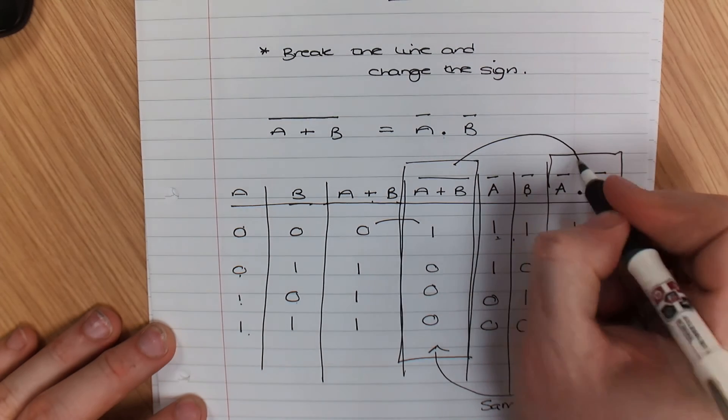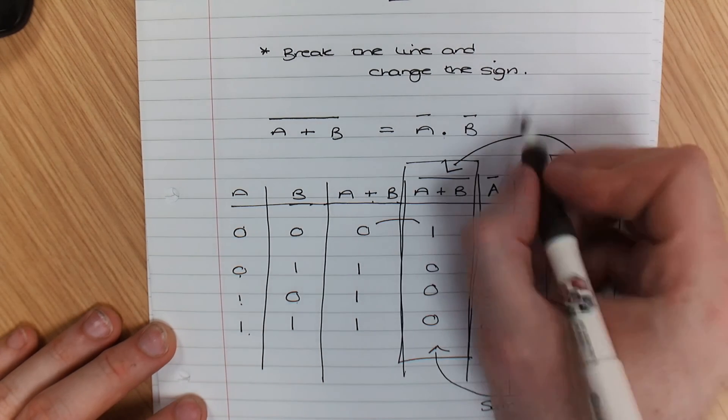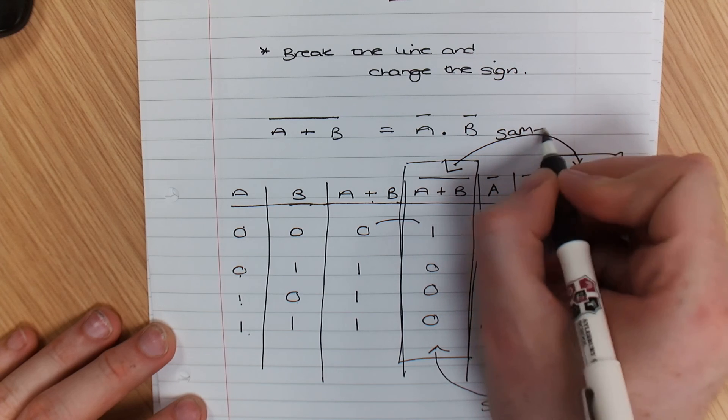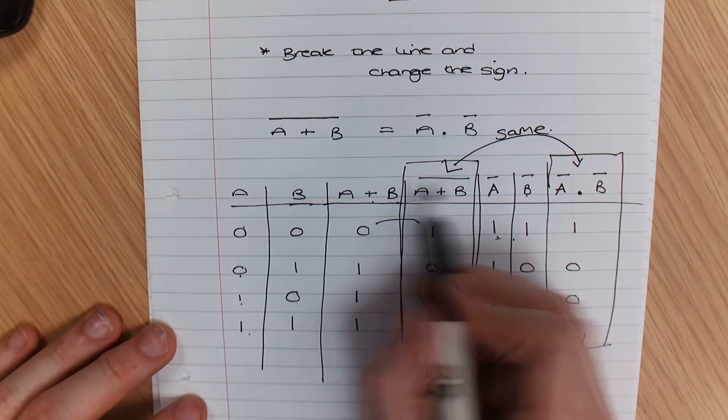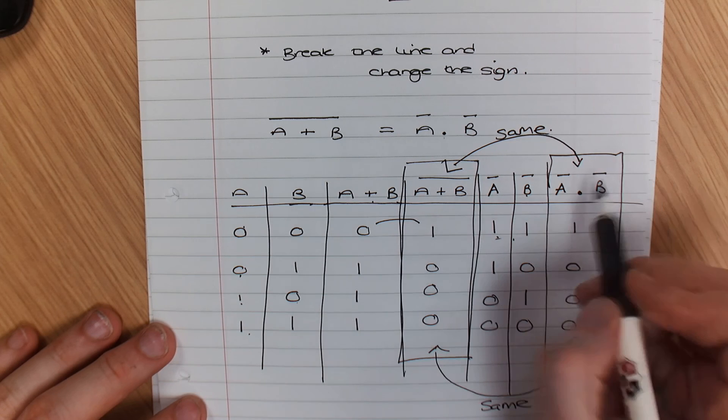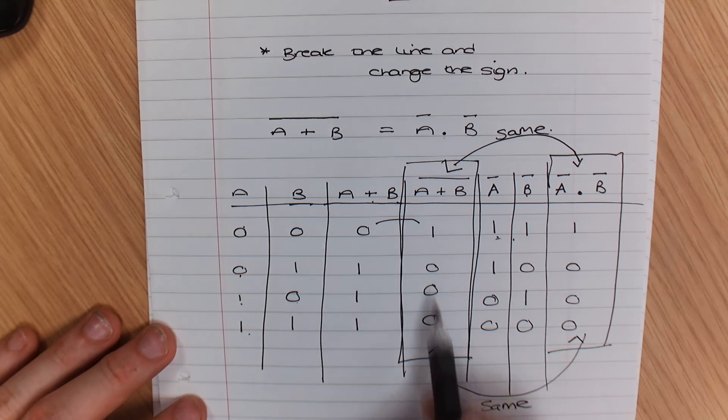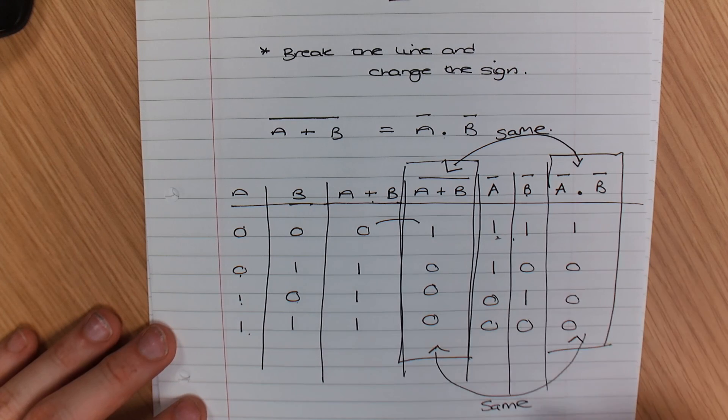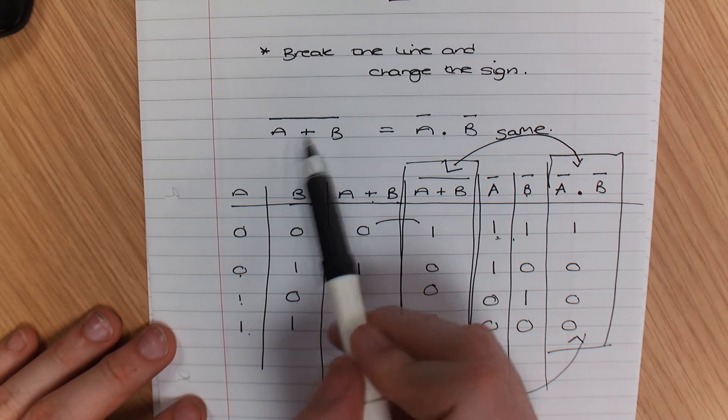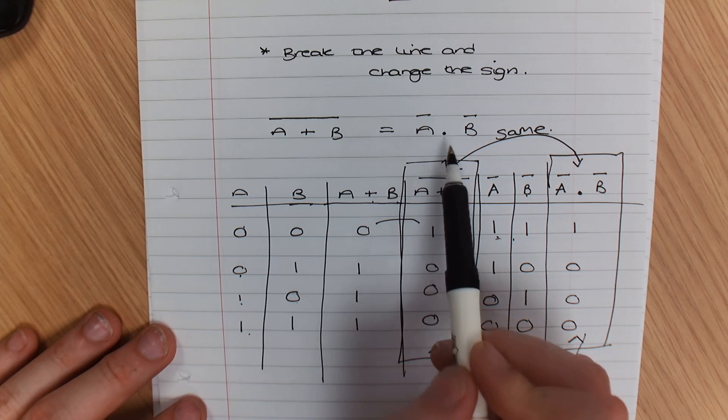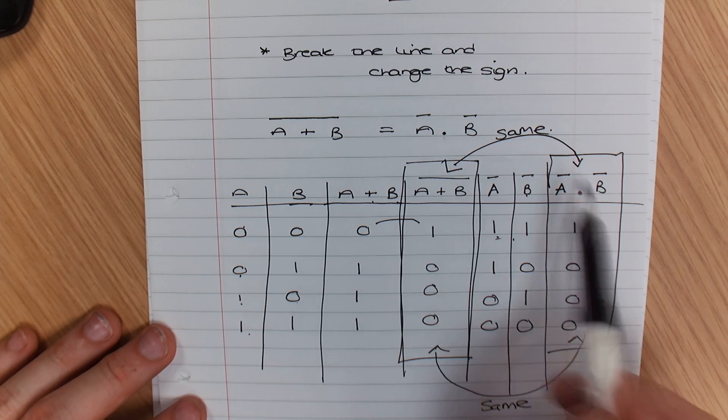So when we break down the rules, not A or B is the same as not A and not B. You can see the outcome is exactly the same. That is why we break the line and change the sign because it will still work.